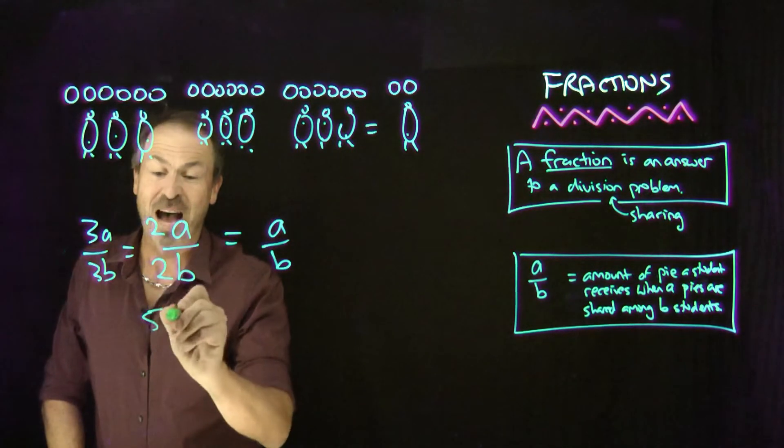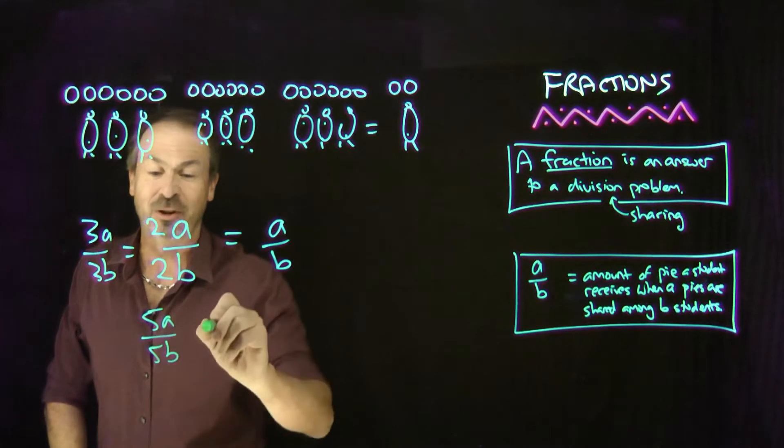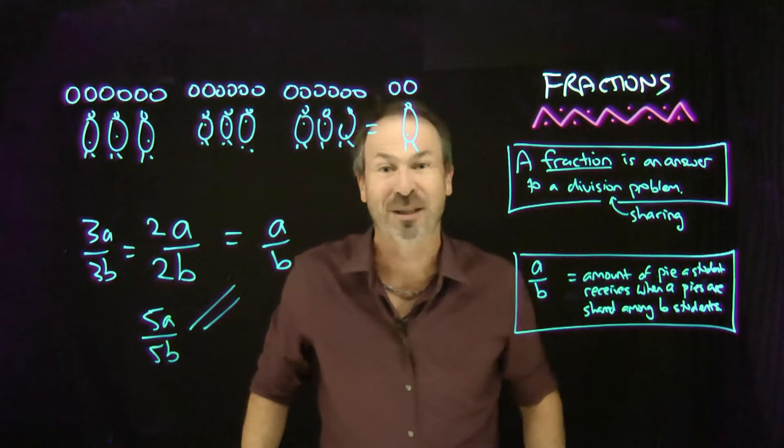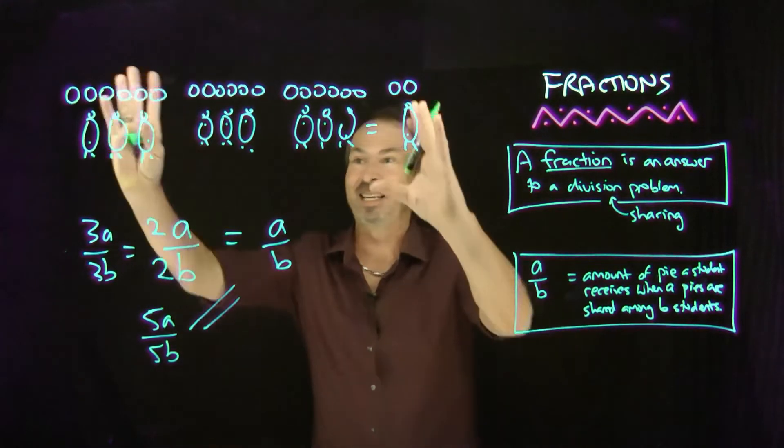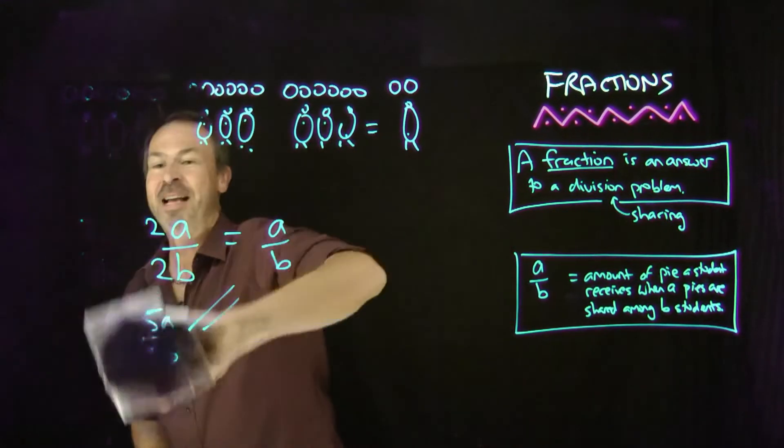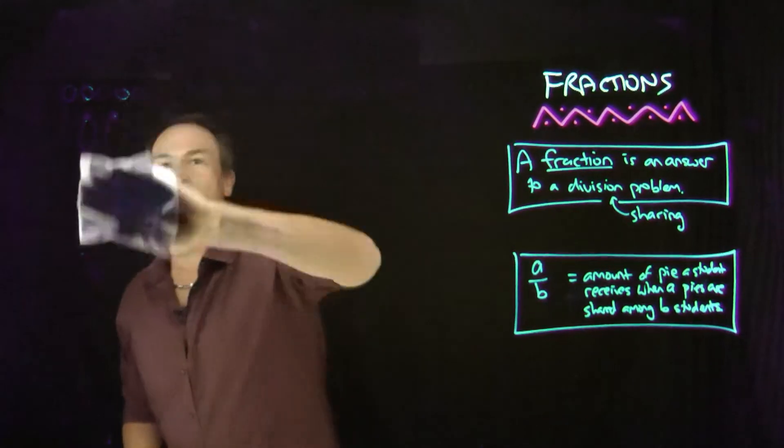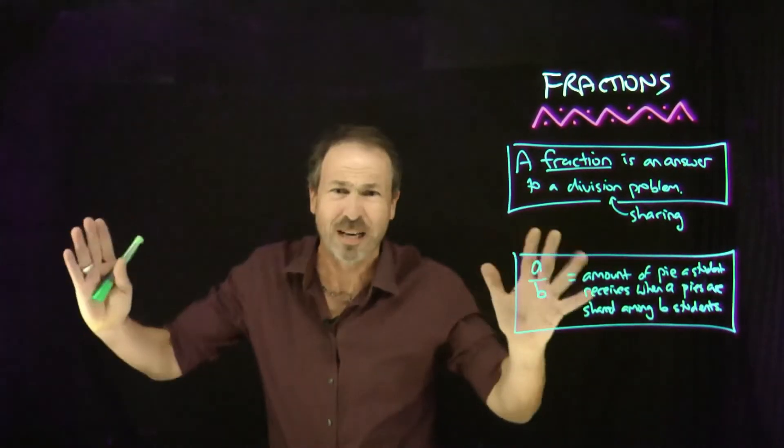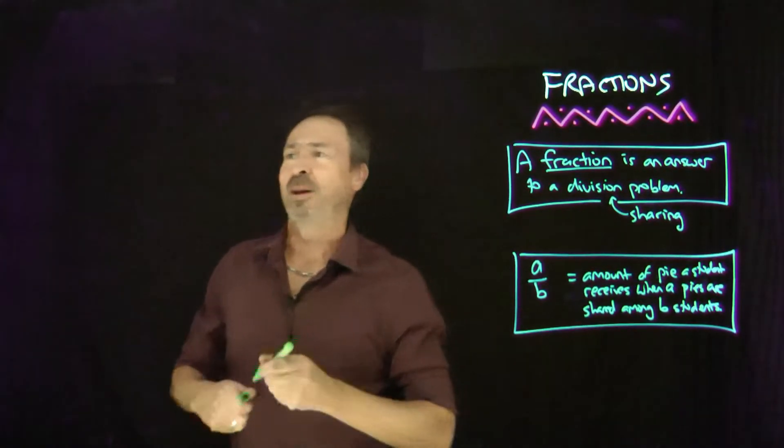Then no matter how I want to scale it, five times the number of pies and five times the number of students, nothing changes. It's still the same result as before. I can see that in this model. It's beautiful. That is my fourth fraction belief. In fact, it's the key one. It's the big one that really makes everything, actually truly everything work. It's the most important belief of all.